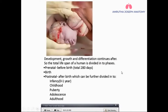As you know, development continues afterwards, so the total lifespan of the human can be divided into some phases called prenatal, birth, and postnatal. Prenatal is before the birth, constituting around 20 to 80 days. Birth is the process where we are coming into the world.